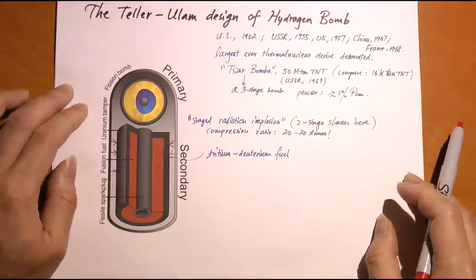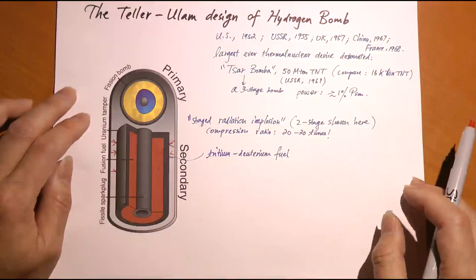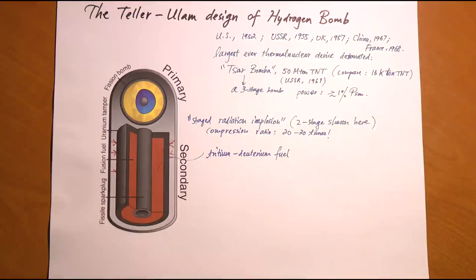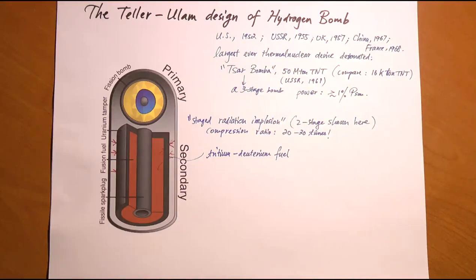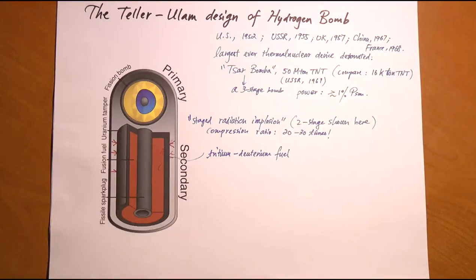Today there are several other nuclear powers beyond the original five declared nations, but mature thermonuclear bomb technology appears limited to those five countries. North Korea, for example, is believed to have only rudimentary fission bombs rather than the far more powerful fusion bombs. The U.S. and Russia have modernized their thermonuclear warhead designs, fitting extremely powerful warheads into a much smaller package—a warhead the size of a small table capable of destroying a city.